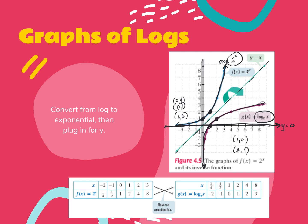If I give you a table of values for an exponential function with these x and y combinations, and I want to graph the logarithmic function, I basically take the chart and make all the y's my x's and all the x's my y's. That's going to be my graph. So if an exponential graph is given to you, just swap the x's and y's to create your logarithmic function. Reverse the order.